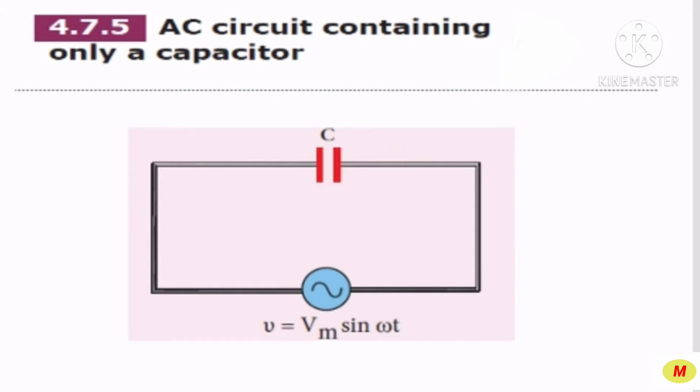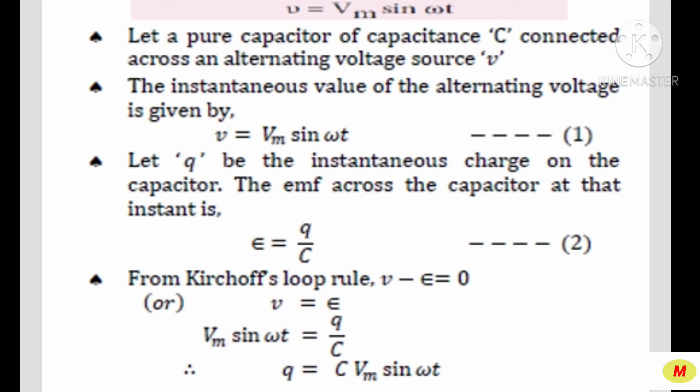Next is about an AC circuit containing only a capacitor. A pure capacitor of capacitance C is connected across an alternating voltage source V. The instantaneous value of alternating voltage is given by V = Vm sin ωt — equation number 1. Let Q be the instantaneous charge on the capacitor. The EMF across the capacitor is ε = Q/C — equation number 2. From Kirchhoff's loop rule, V = ε, so from equations 1 and 2: Vm sin ωt = Q/C, giving Q = C·Vm sin ωt.